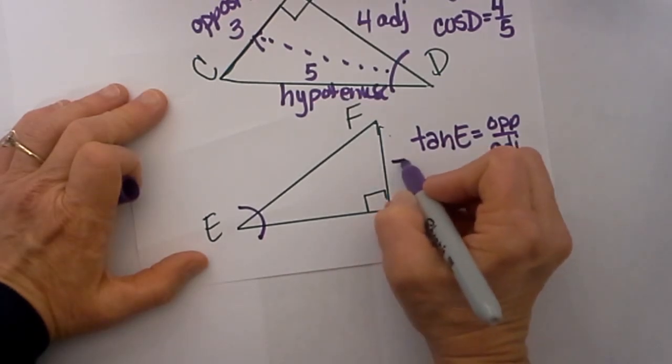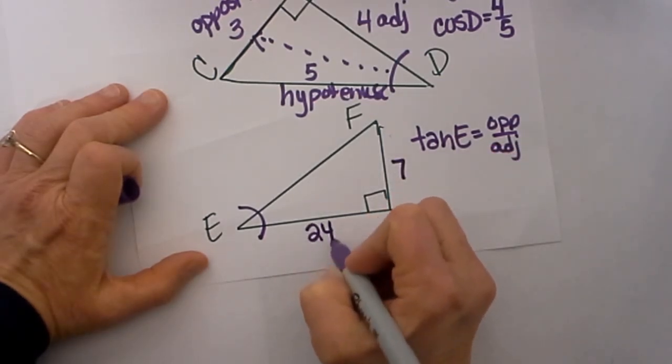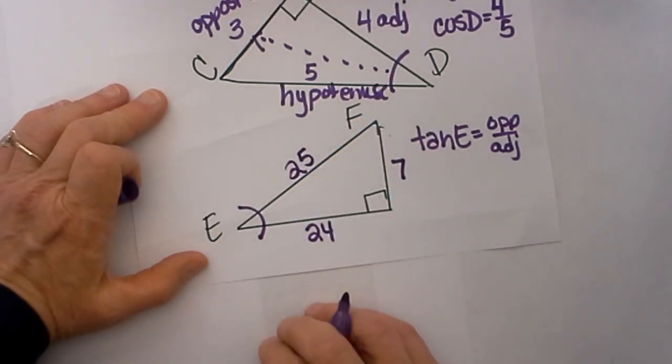I am going to give you lengths of sides, 7, 24, and 25. Those 3 sides form a right triangle.